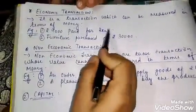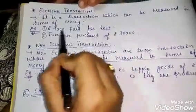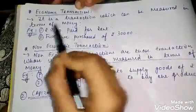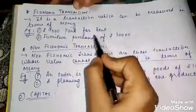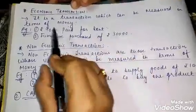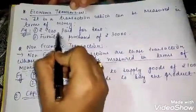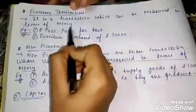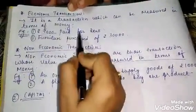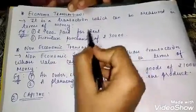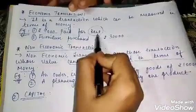Example of an economic transaction: '9,000 paid for rent.' This is a transaction because two parties are involved — me and the landlord to whom I paid the rent. It is an economic transaction because money is involved. Any transaction in which money is involved becomes an economic transaction. The rent can be measured in money terms — it is 9,000 — so it is an economic transaction.